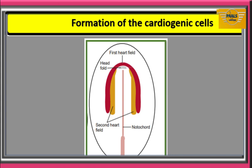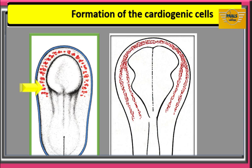Cells in the cardiac crescent constitute the first heart field. Medial to the first heart field is another layer of cardiogenic cells from the splanchnic mesoderm, called second heart field cells. The cells of the heart fields are induced by the underlying endoderm to form cardiac myoblasts and blood islands, which form blood cells and vessels through the process called vasculogenesis.